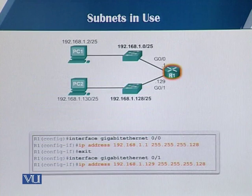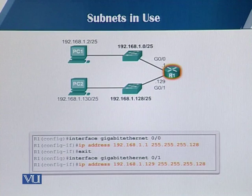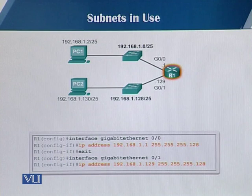To configure the IP addresses on router R1, you use the command 'interface gigabit ethernet 0/0' and then run 'IP address 192.168.1.1' with the subnet mask 255.255.255.128 for the first interface.